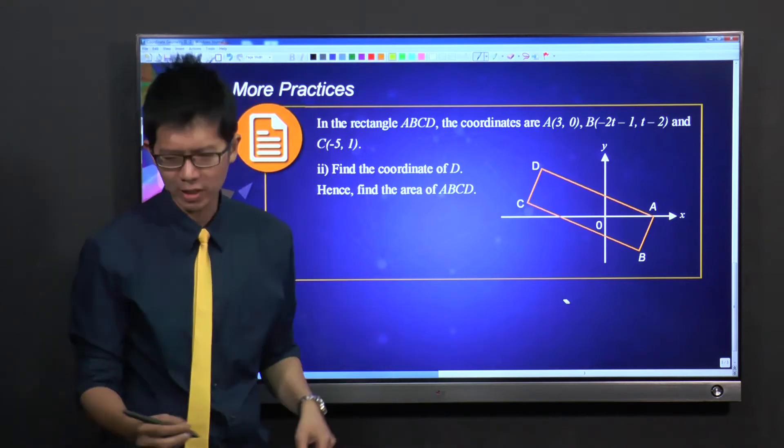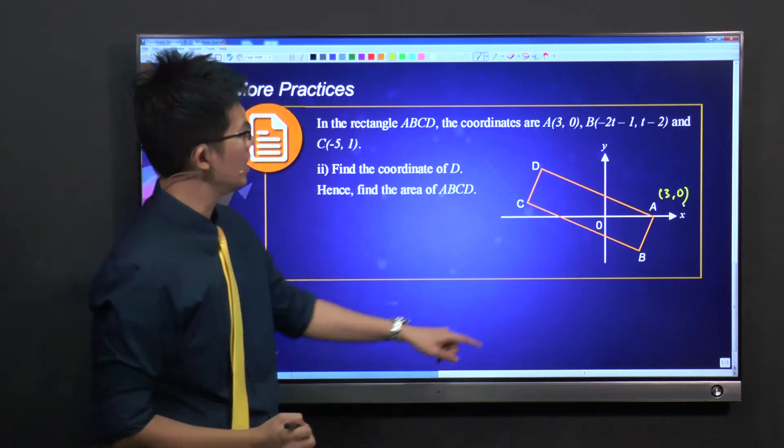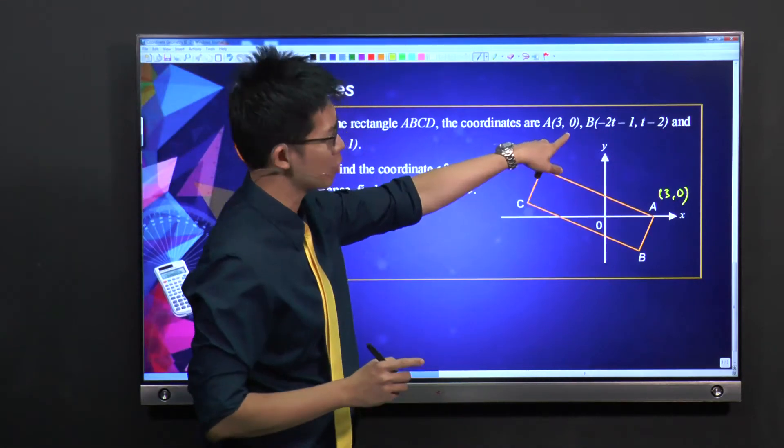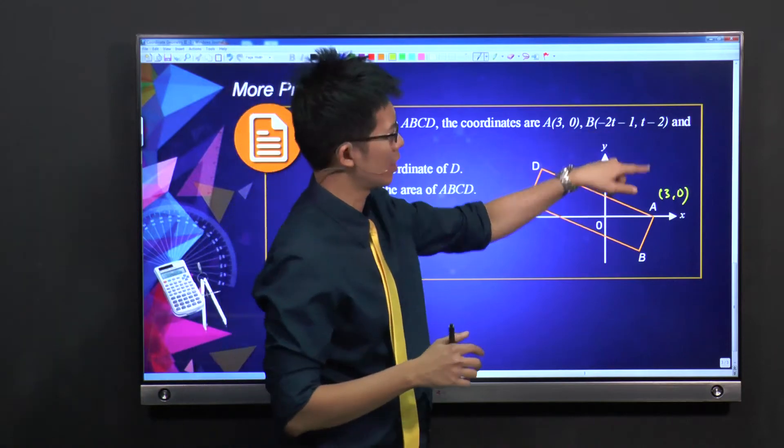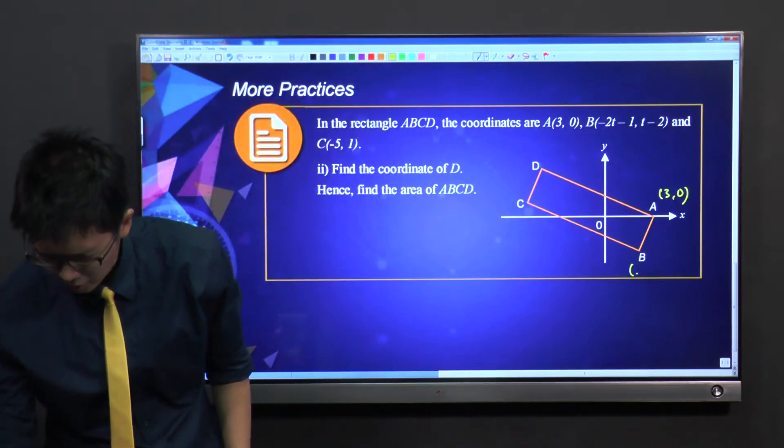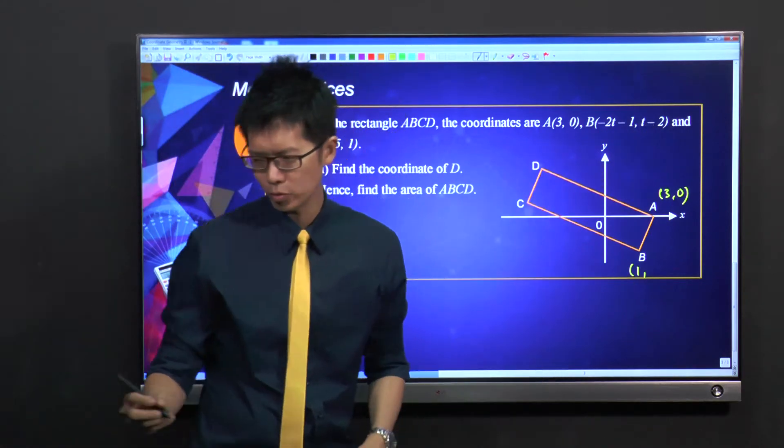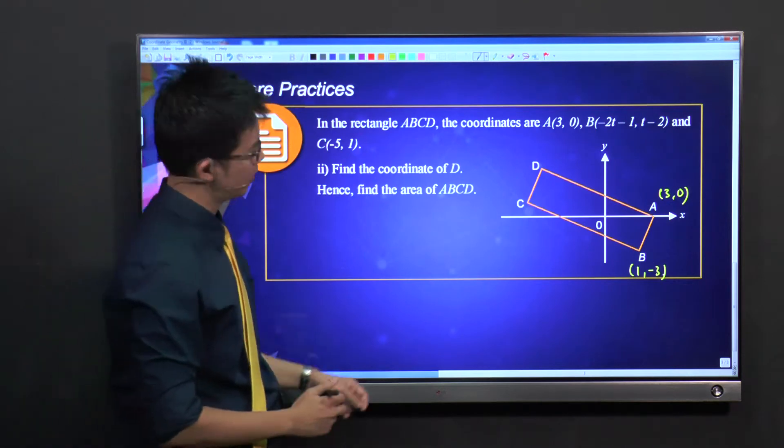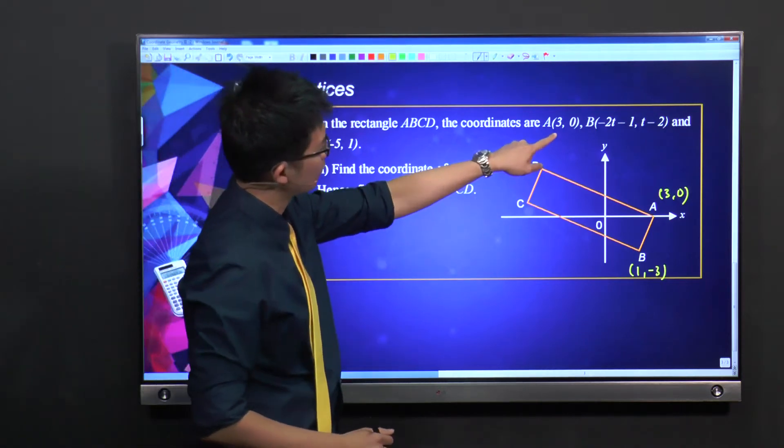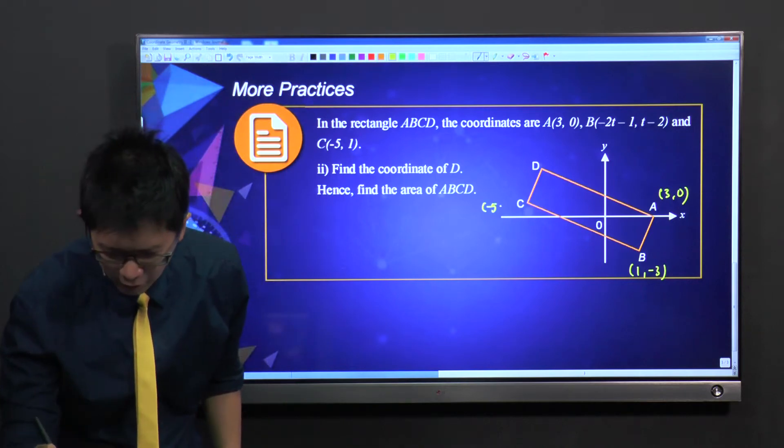Let me write down the coordinates. A is (3, 0). For B, when T is -1, -1 times -2 is 2, so 2 minus 1 is 1. And -1 minus 2 is -3. So B is (1, -3). And for C, it's over here at (-5, 1).